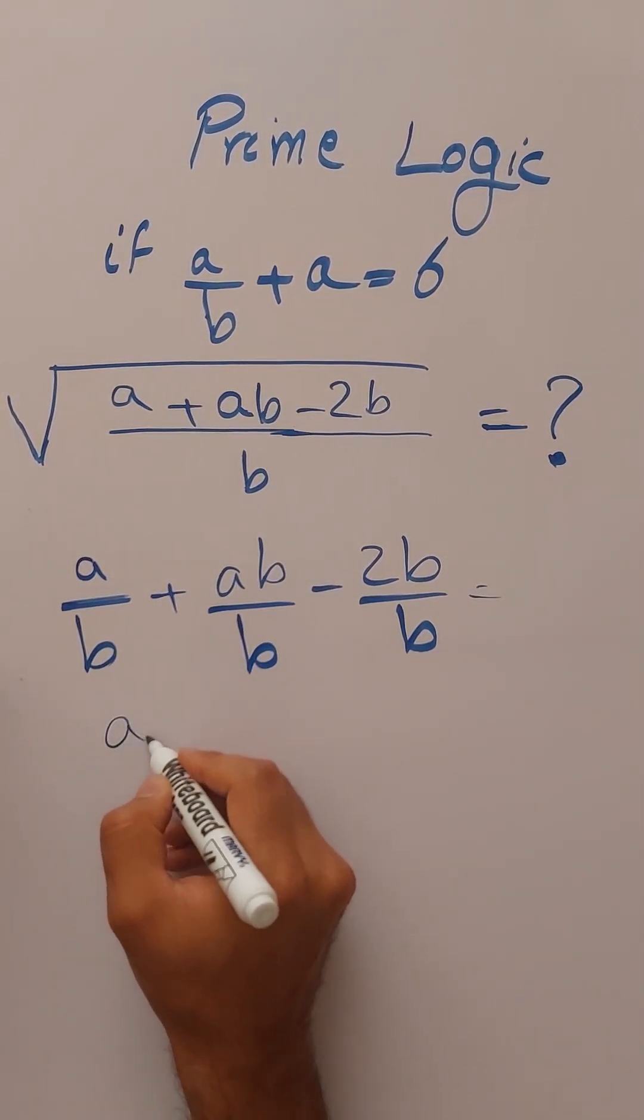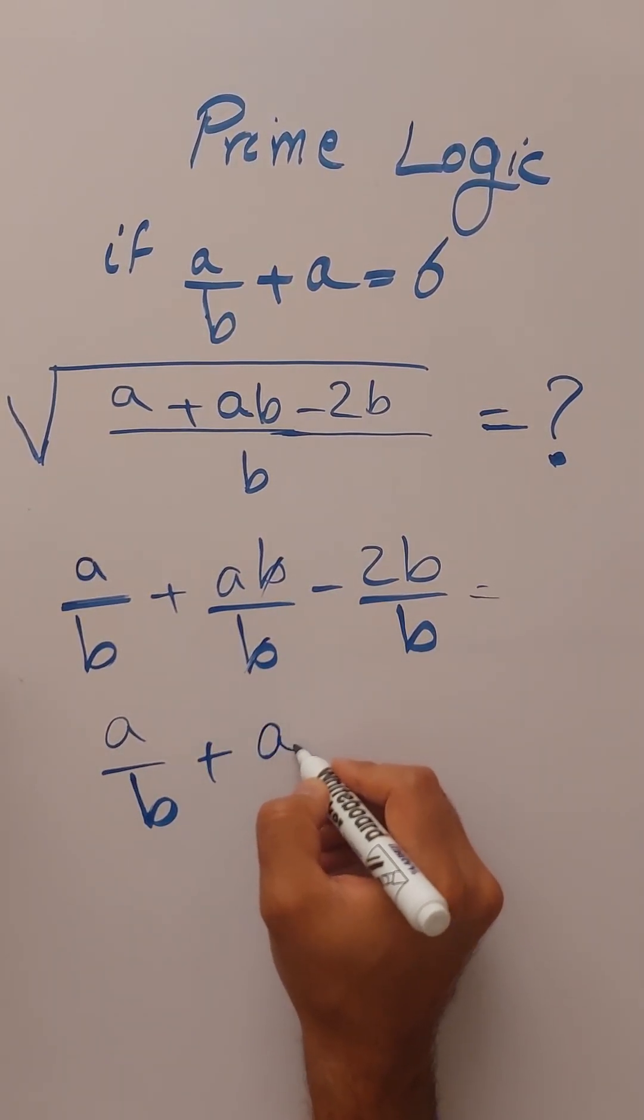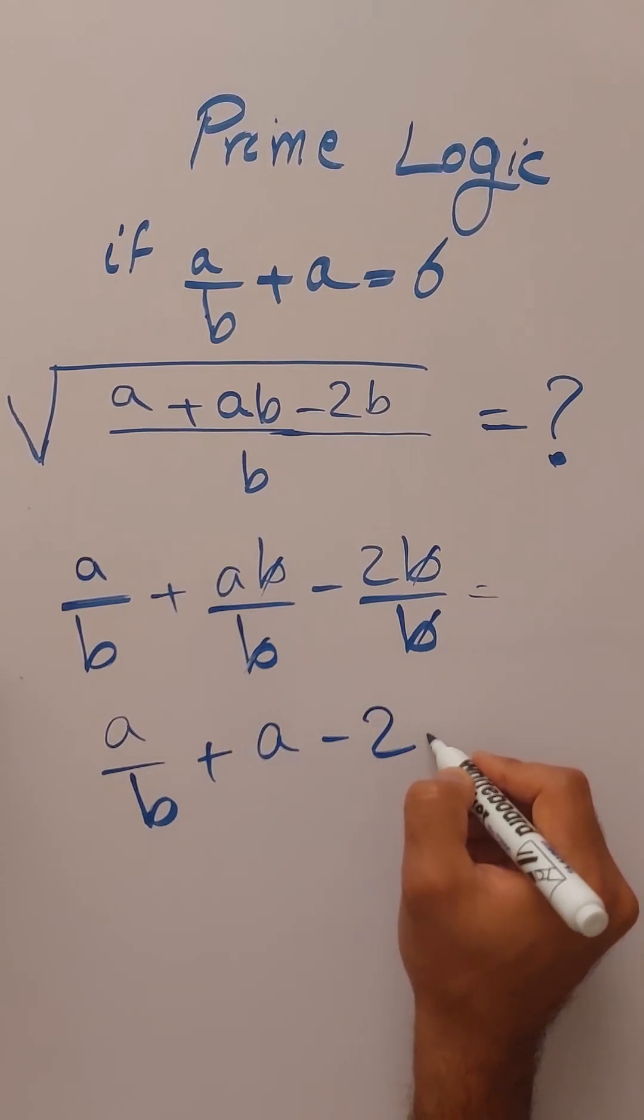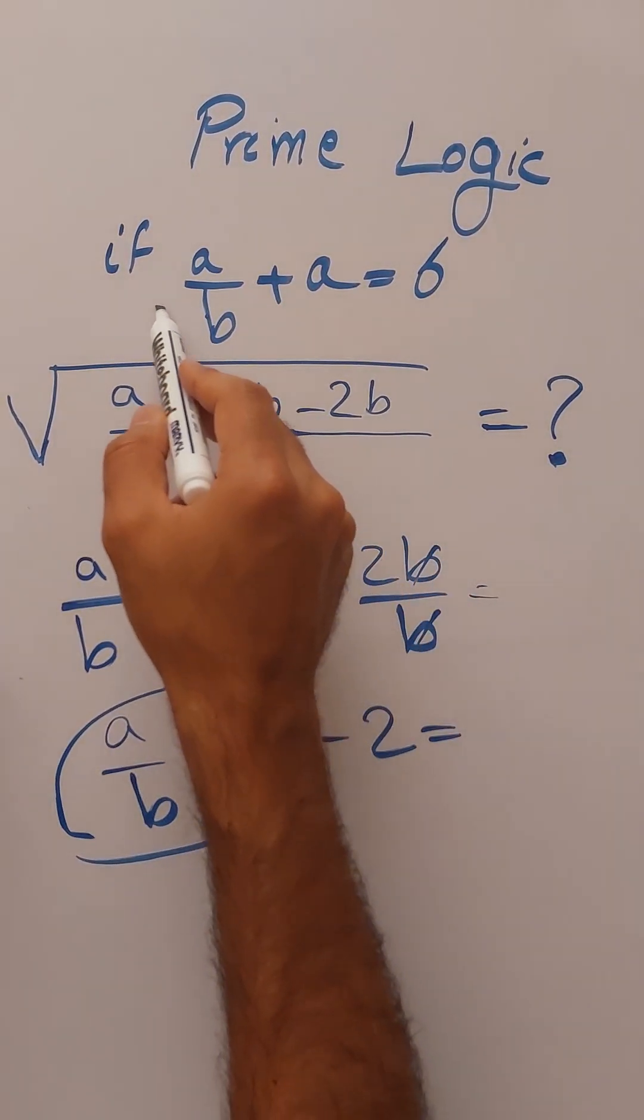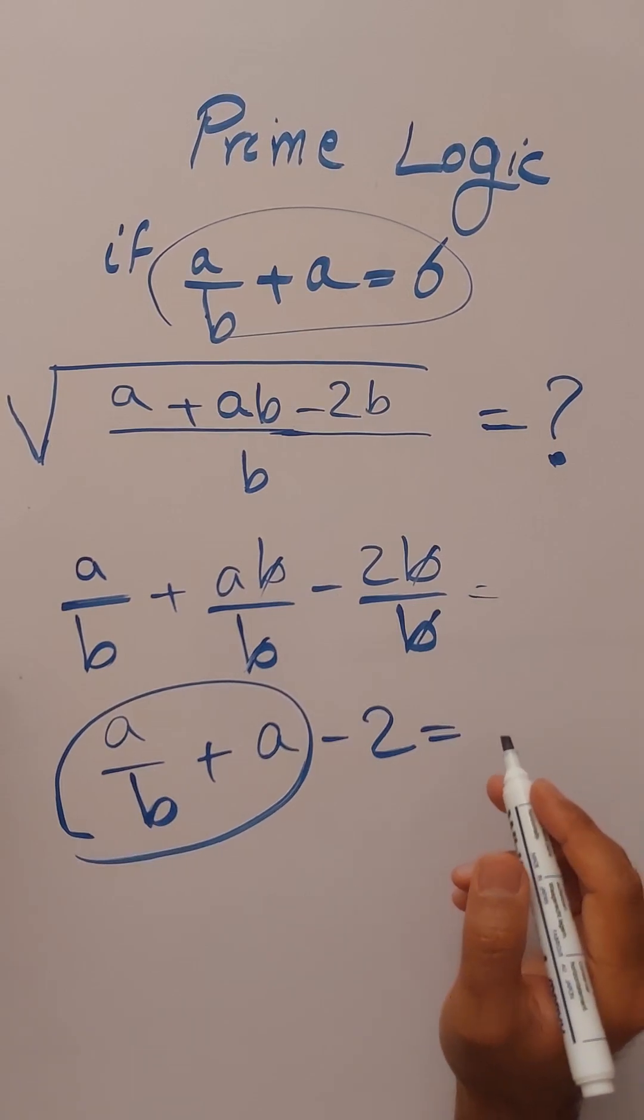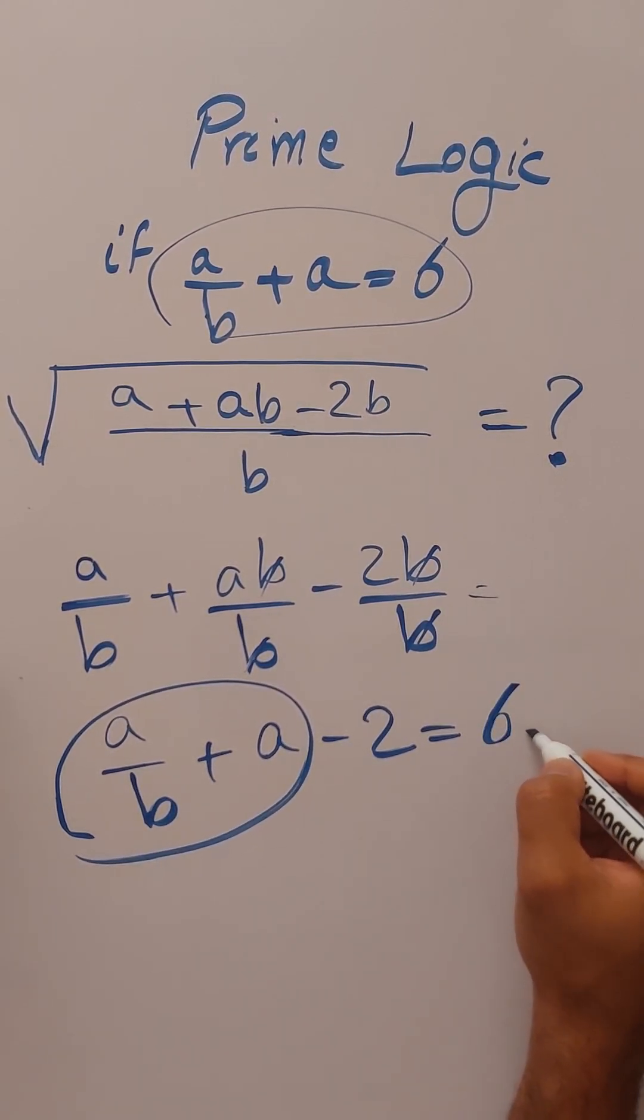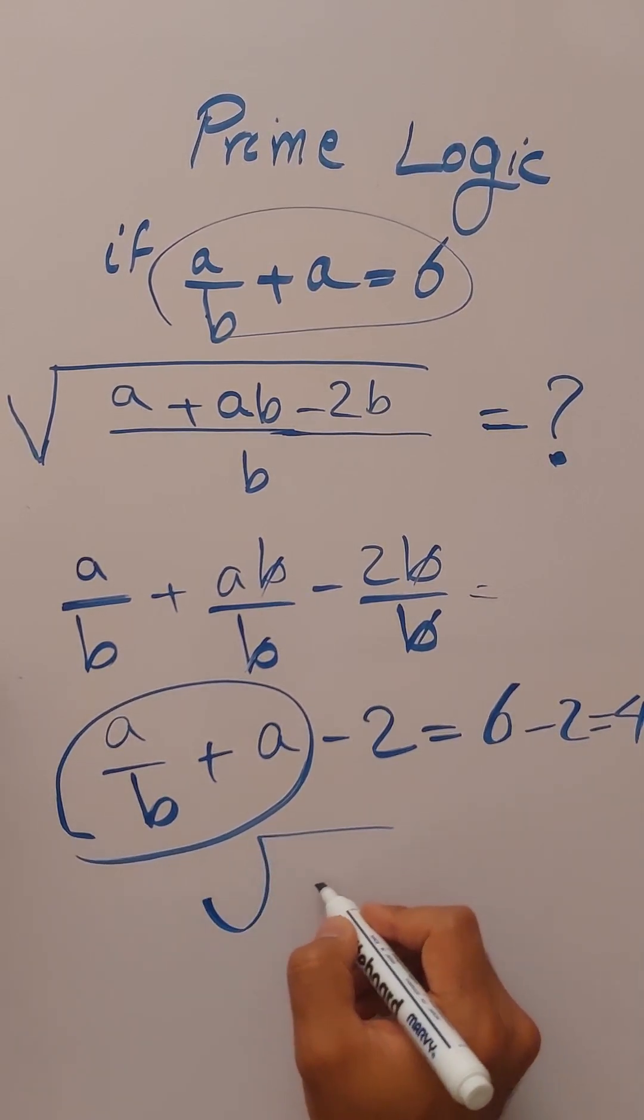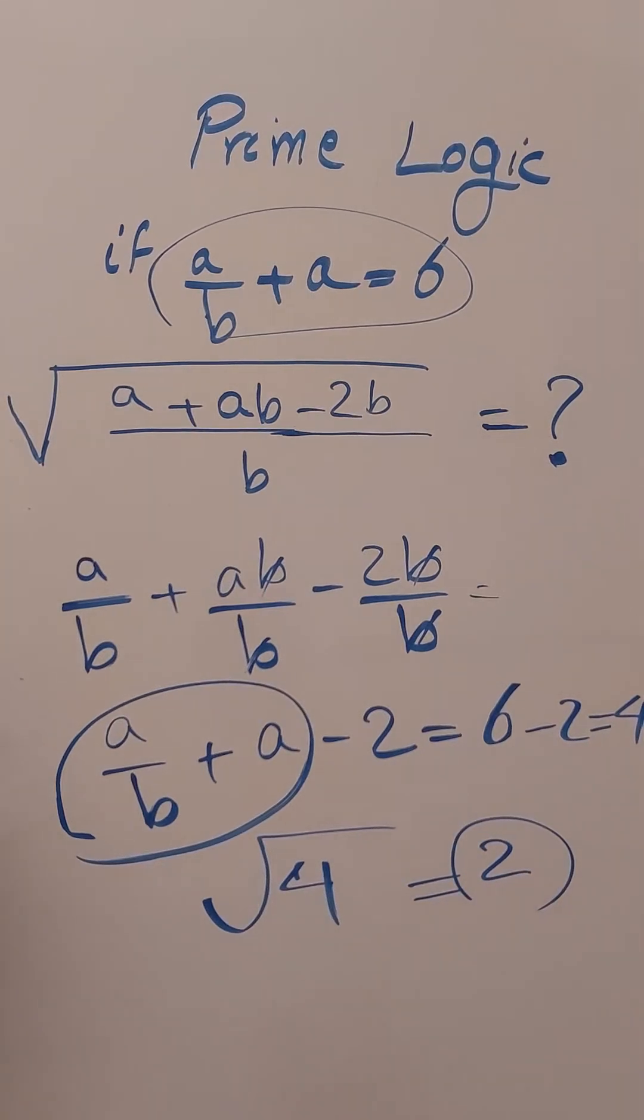So this thing is A over B plus A minus 2. So we have the value of this term in the assumption in the first thing. So A over B plus A is 6. So 6 minus 2 is 4. So square root of 4 is 2. And that's the final answer.